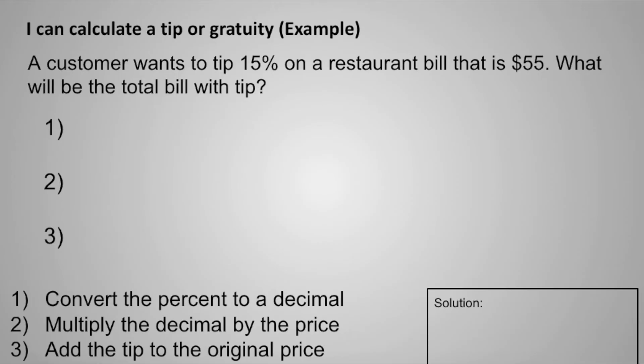So once again, we have three steps to solve. Step one is to convert the percent to a decimal. We can do that by removing the percent sign and then dividing by 100. 15% as a decimal is 0.15. Step two is to multiply the decimal by the price. 0.15 times 55 equals 8.25. So the tip will be $8.25.